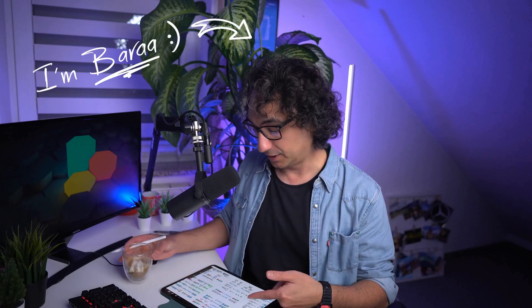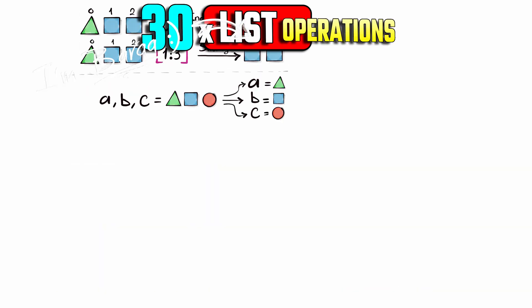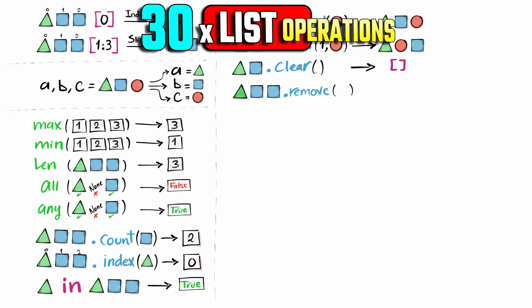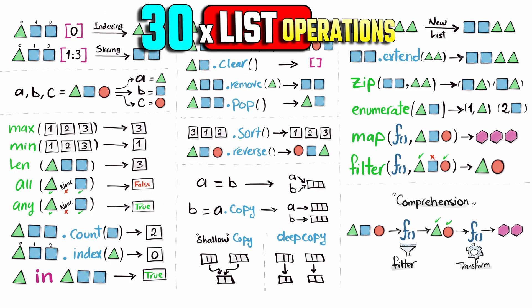Hey friends, so now I'm going to show you a cheat sheet where we're going to cover 30 things: functions, methods, and operators that we can use in Python data structure lists, and we're going to do the whole thing in just a few minutes.